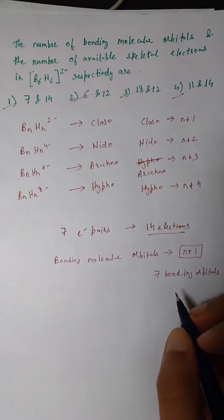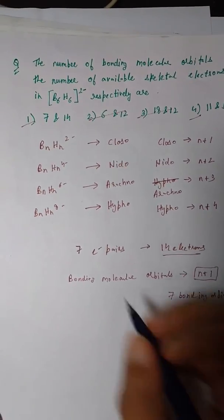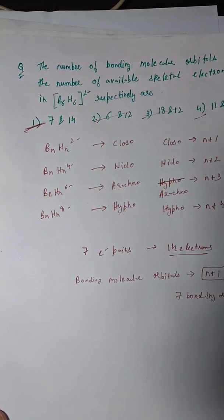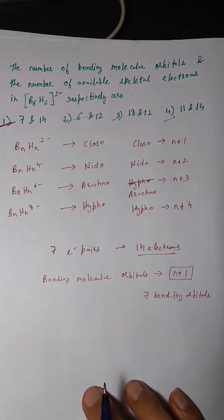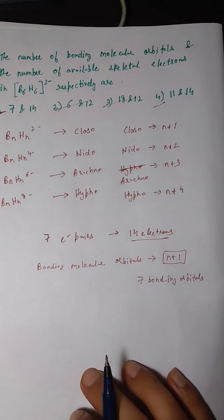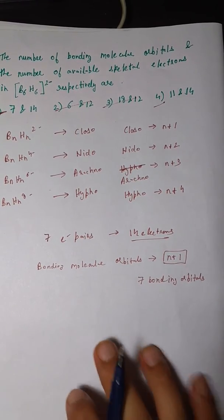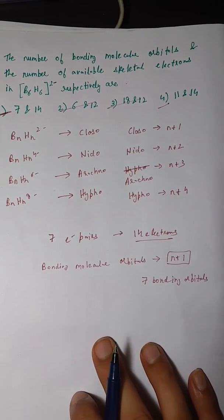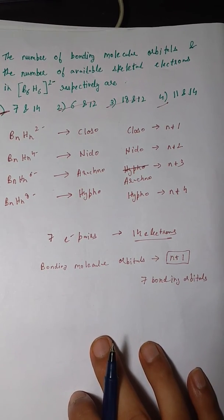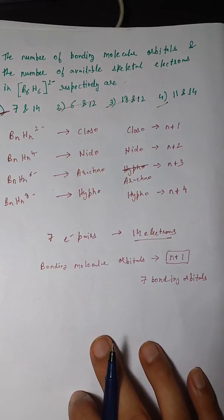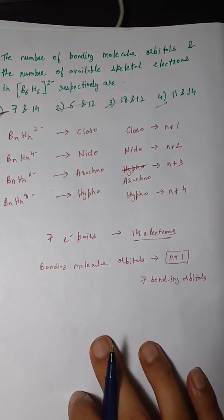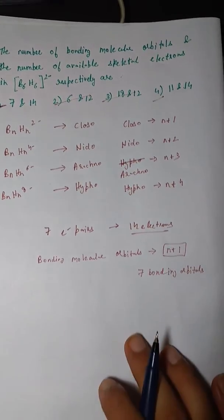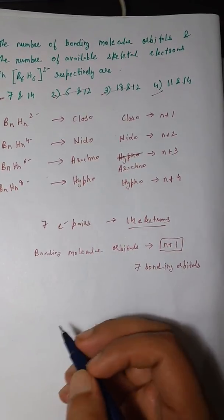So the correct answer is the first option: 7 bonding molecular orbitals and 14 skeletal electrons. For those who don't need the detailed method, the shortcut is sufficient for exams since subjective explanations are not usually required. But here's the detailed explanation anyway.